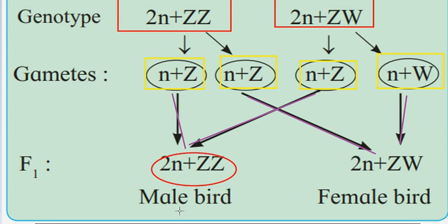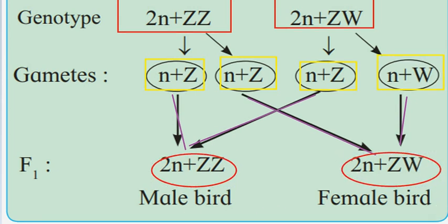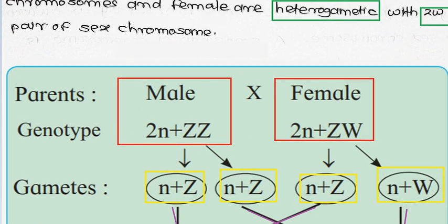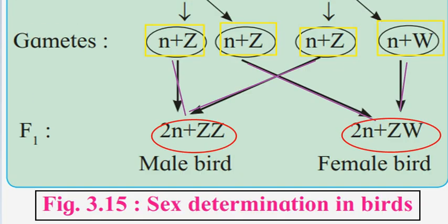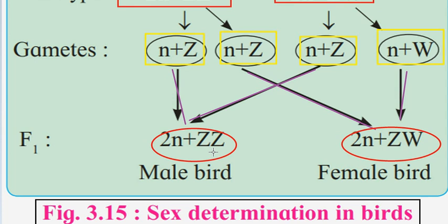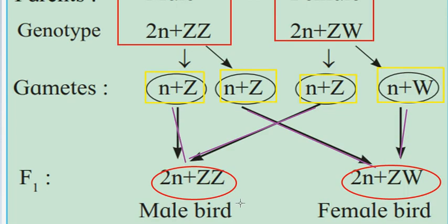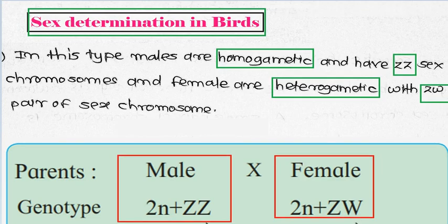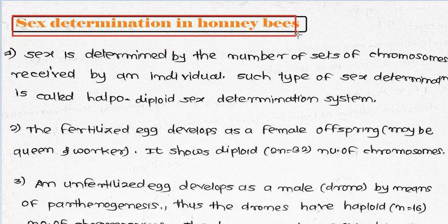During gamete formation in birds, one gamete with Z and another with W is produced. A Z gamete from male combined with Z gives ZZ (male bird), and Z combined with W gives ZW (female bird). So in birds, males are homogenetic - homomorphic meaning same type of gamete - and females are heteromorphic, having Z and W. This is sex determination in birds.